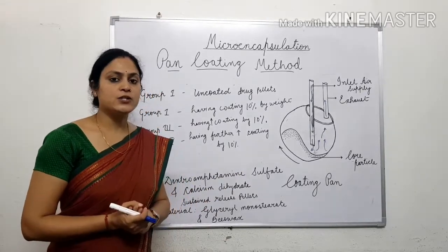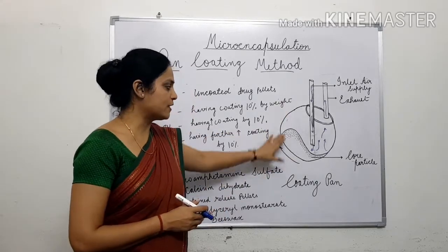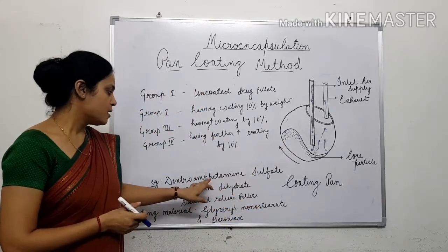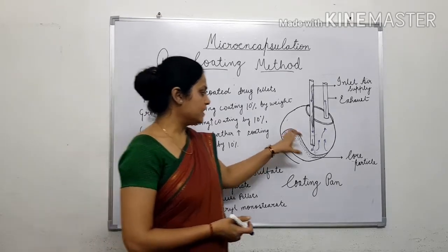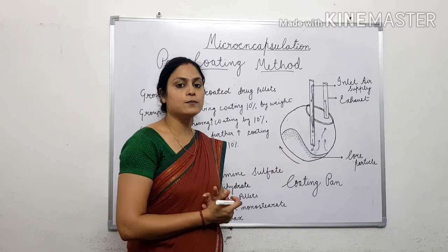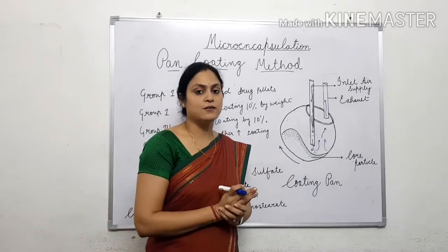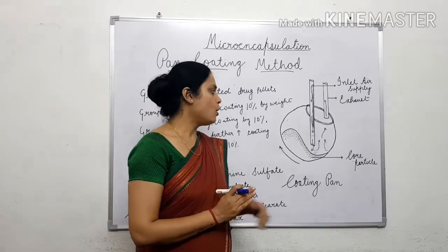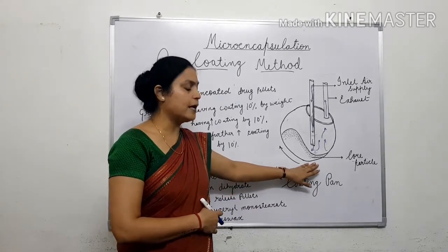Initially, inert substrates such as non-pareil sugar seeds are taken in the coating pan and they are first coated with the drugs. The combination of these drugs in the required amount is applied with the help of USP simple syrup. After proper mixing, talc is sprinkled over these core materials — the non-pareil sugar seeds — for smoothing of the surfaces. Proper smooth spherical drug pellets are formed which have a drug coating on them.